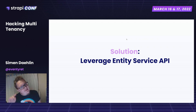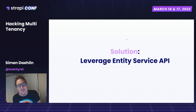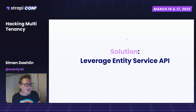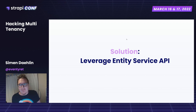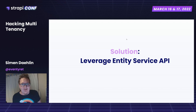The idea I came up with was to leverage the Entity Service API so we can use Strapi to talk to Strapi. Strapi is a headless CMS and an API, so why not make Strapi talk to Strapi in simple terms? Why not just make them talk to each other?